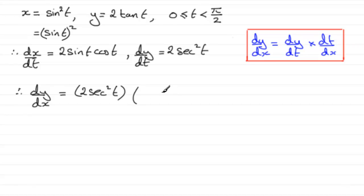So in other words, dt/dx is going to be 1 divided by 2 sine t cos t. What we've got here is these two twos cancel one another out. And sec squared t is the same as 1 over cos squared t. We've got to multiply that with 1 all over sine t cos t.